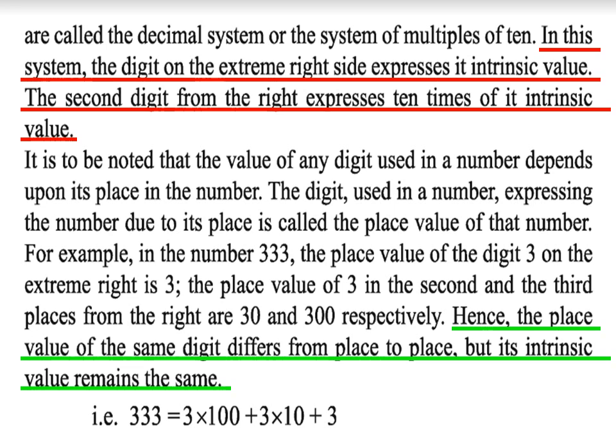In a number, expressing the value of a digit due to its place is called the place value of that digit. For example, in the number 333, the place value of the digit 3 on the extreme right is 3, the place value of 3 in the second place from the right is 30, and in the third place it is 300 respectively. Hence, the place value of the same digit differs from place to place, but its intrinsic value remains the same.